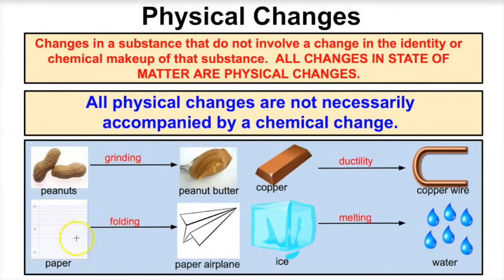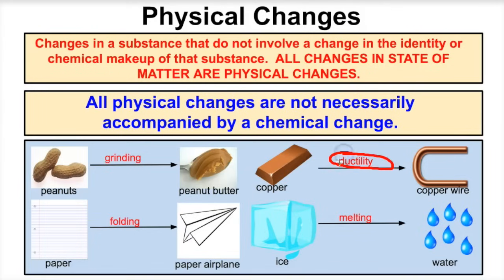If we fold a piece of paper to make a paper airplane, that's a physical change — we're not changing the chemical makeup, we're simply changing its physical appearance. Similarly, if we take a copper bar and turn it into copper wire, anytime you can take a metal and turn it into wire, that shows the metal is ductile. Ductility is the process of turning a metal into wire. We still have copper — it's just taking on a different physical form.